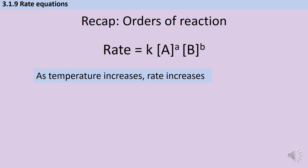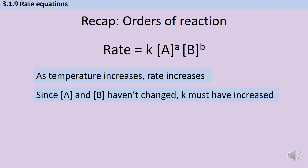Looking at our rate equation, if rate is increasing, there are only two ways that this could happen: either K is changing or the concentrations are changing. So if we know that the concentrations for a particular series of reactions have remained constant, then if the rate is increasing, it must be because K has increased. Therefore, we can say that as temperature increases, K increases.